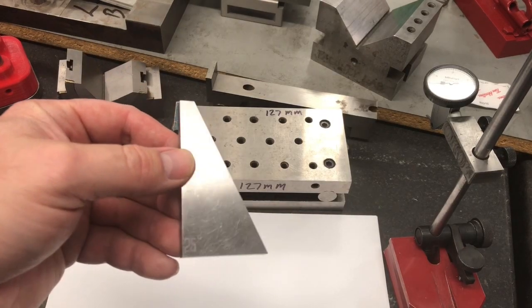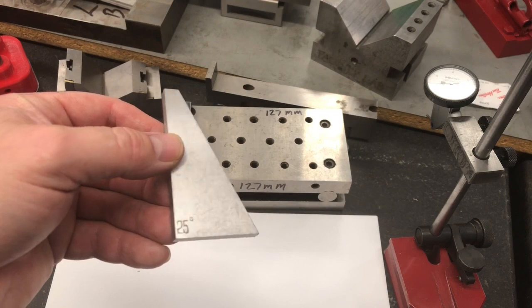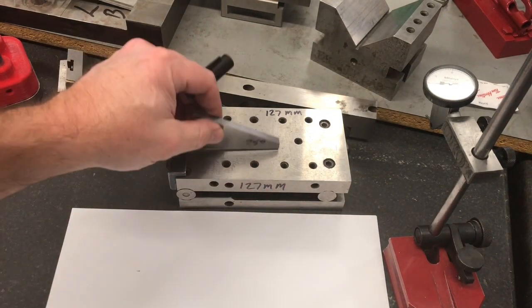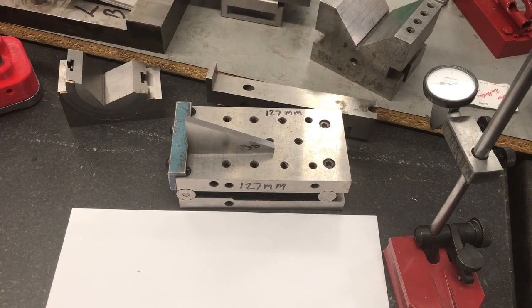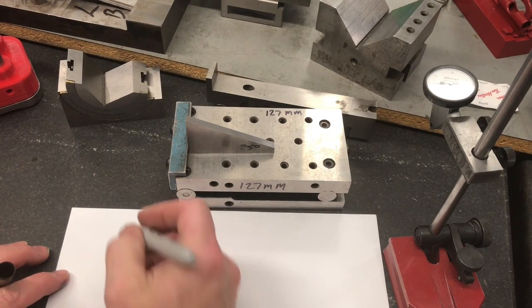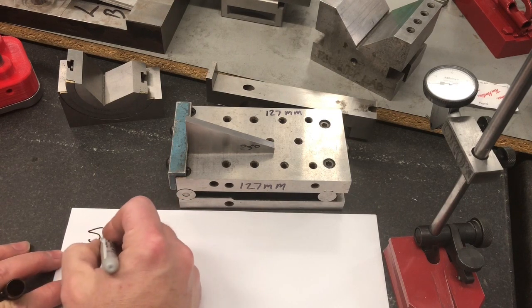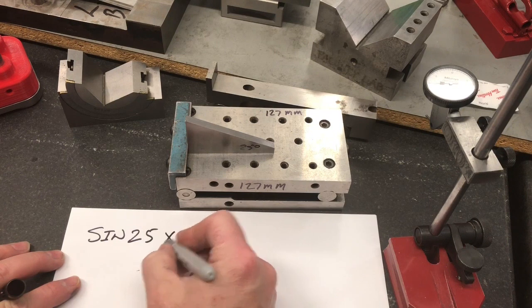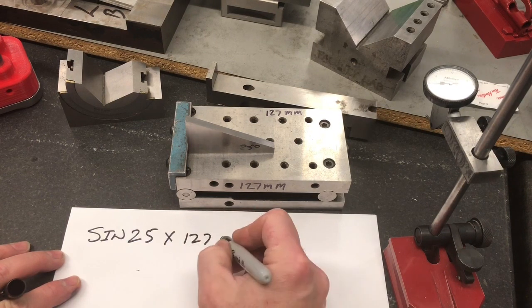Okay, so I have a metric gauge block set. I want to check this 25 degree angle on a sine bar. This sine bar is 127 millimeter. So I'm going to use metric gauge blocks. I'm going to go sine 25 times 127 millimeter.